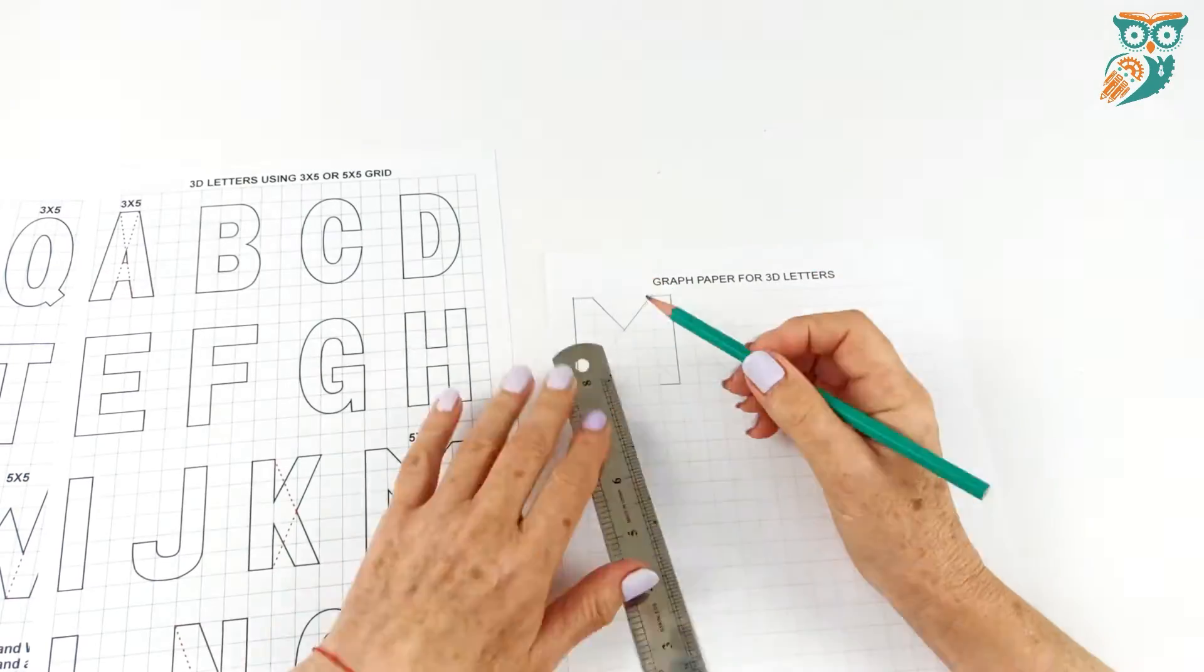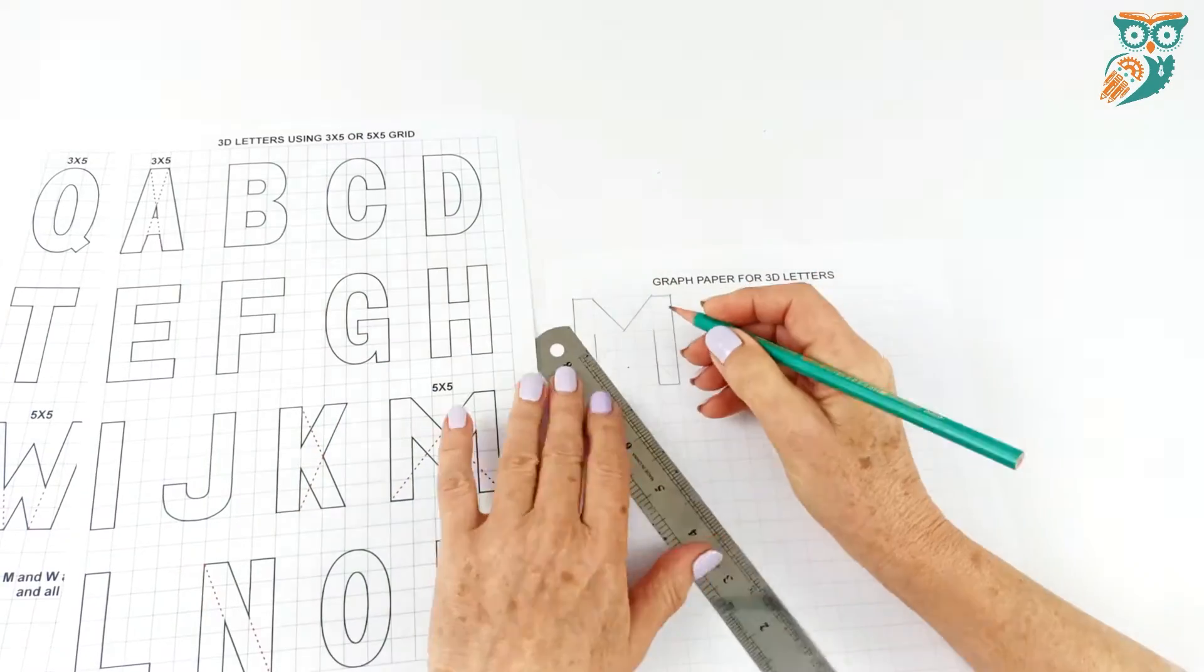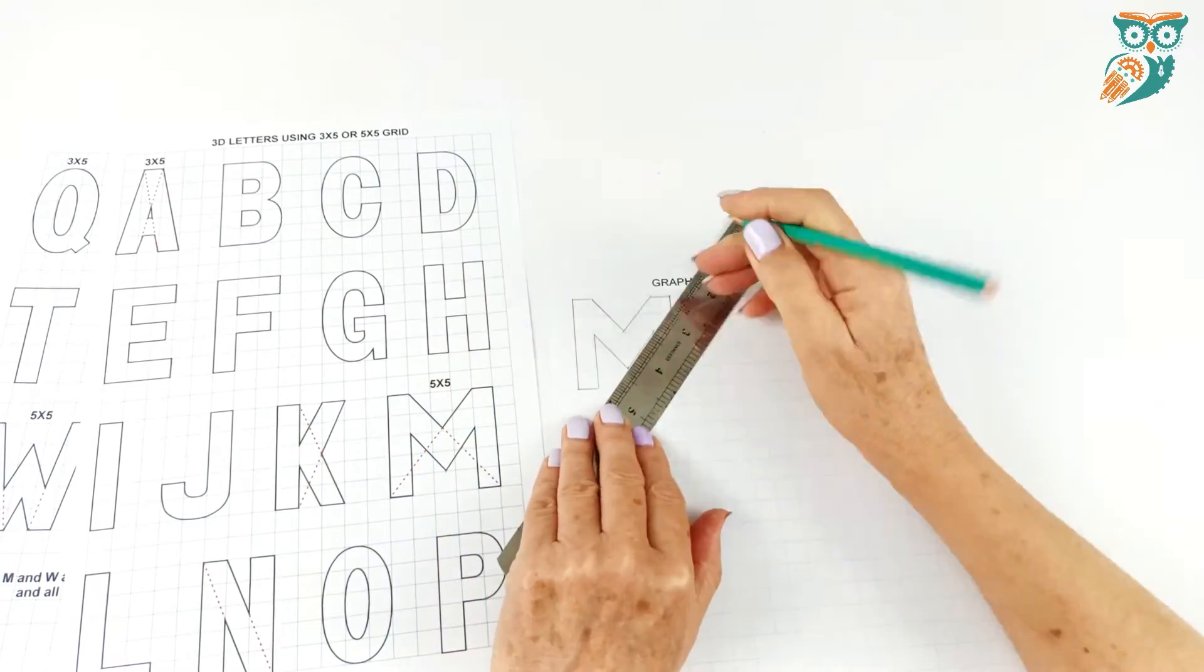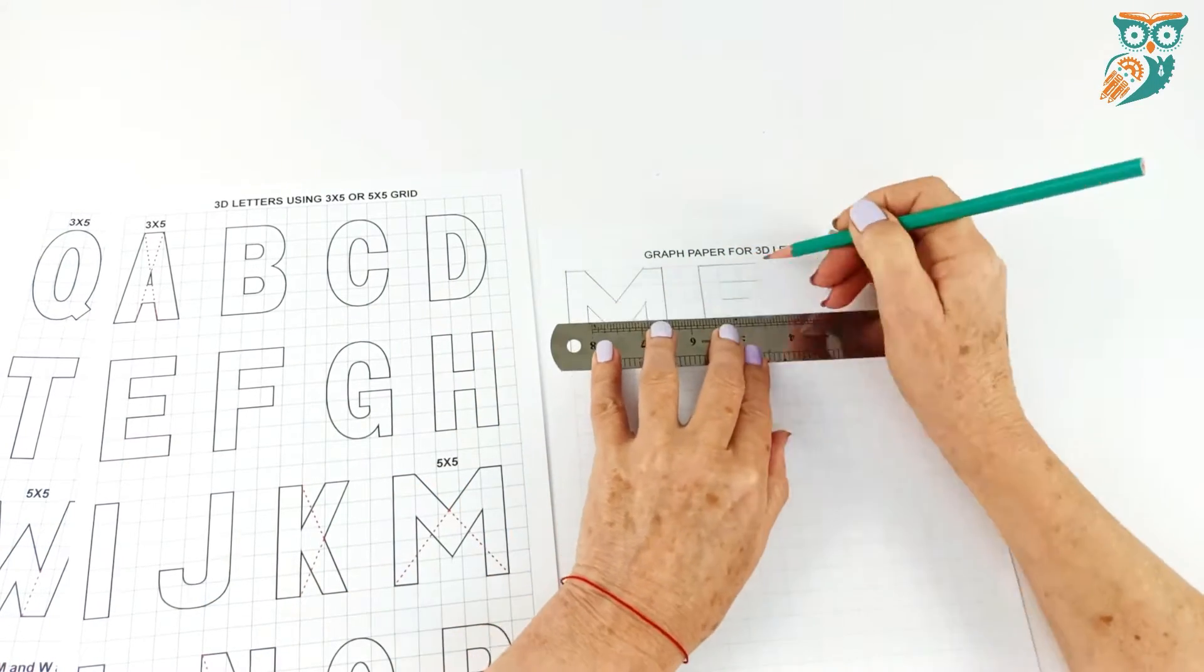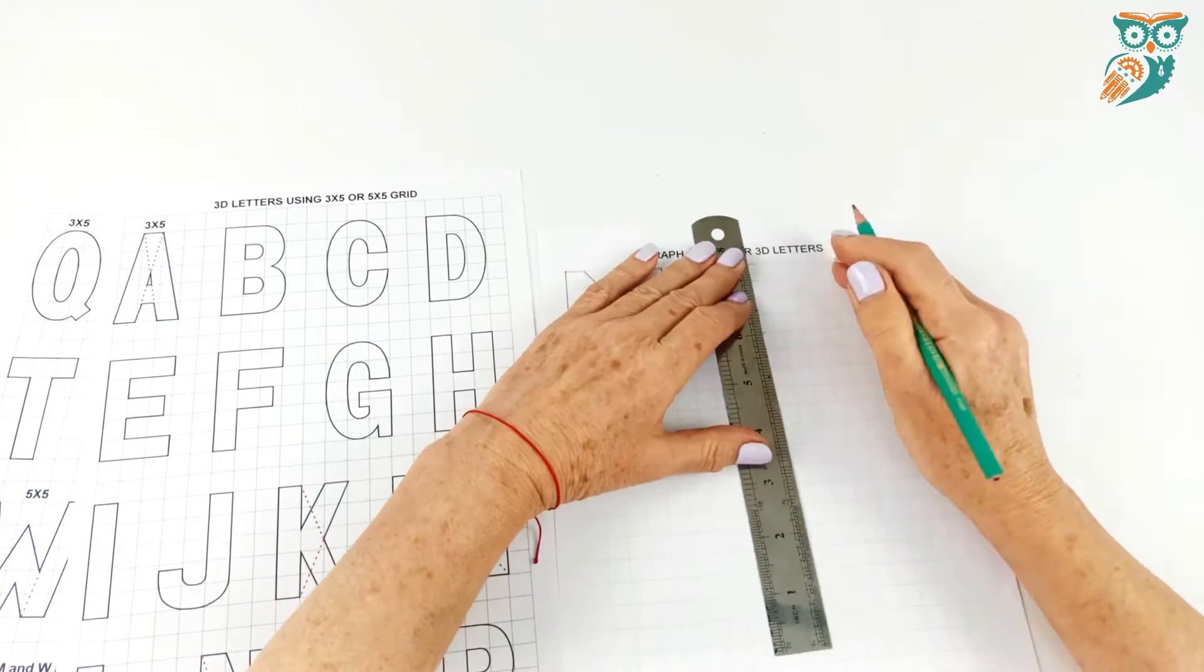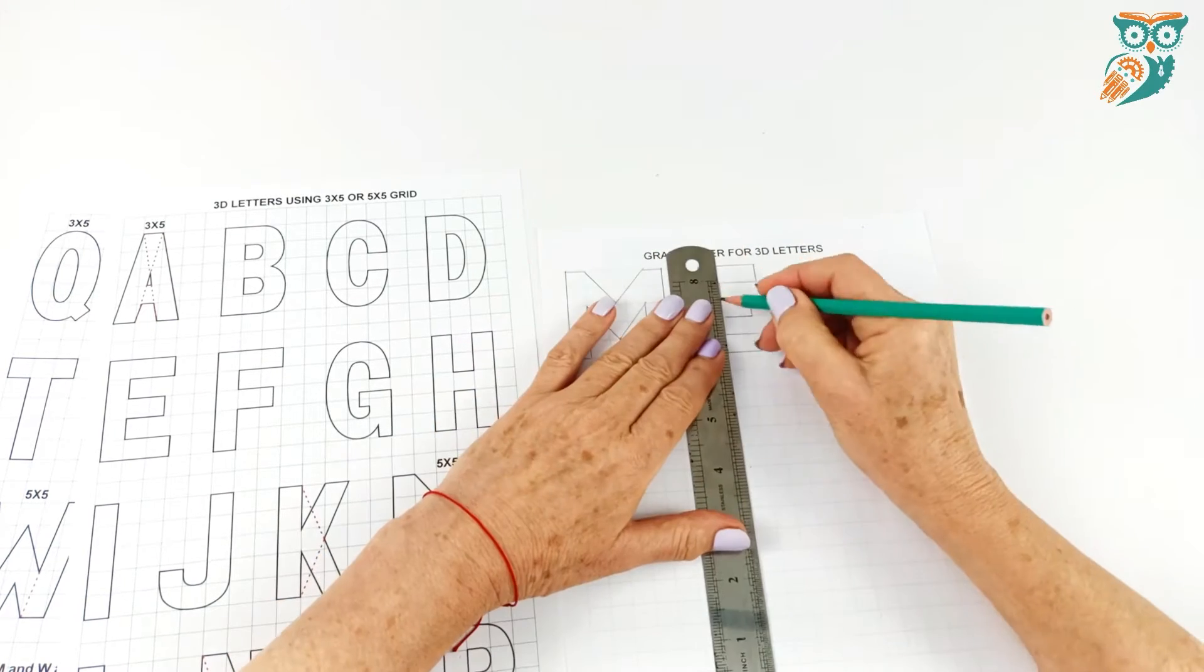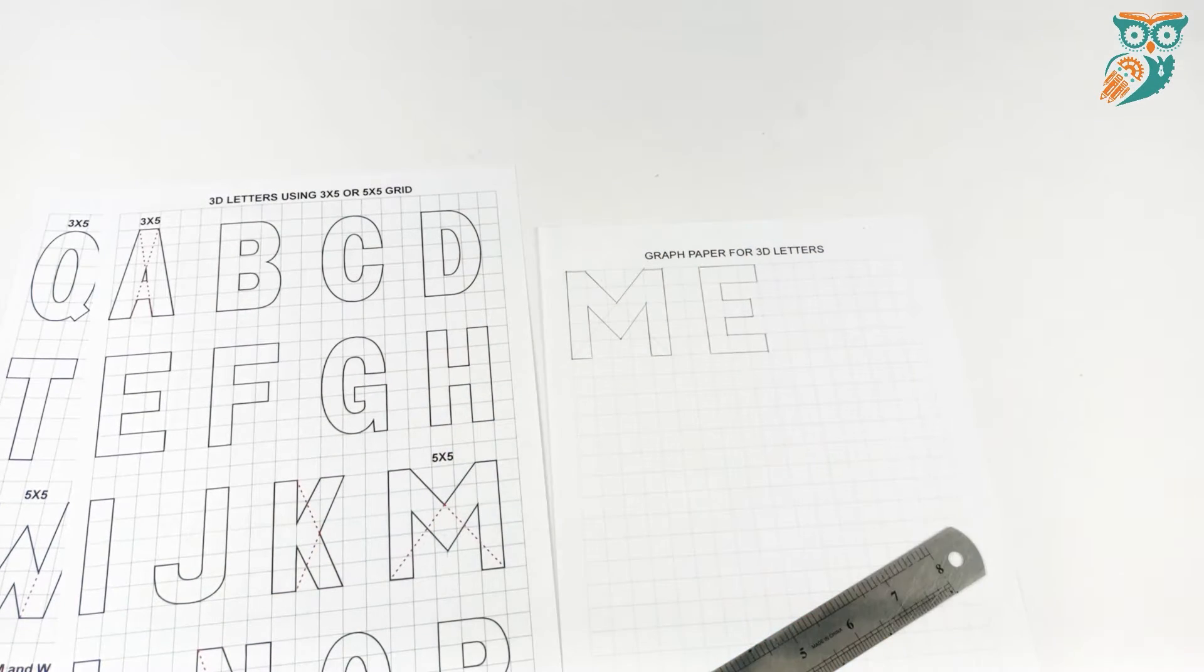And we're just gonna go and we're gonna start making our block letters on our grid paper. And we have all the letters there. It's all in capitals. So it makes it a little easier for creating your shapes. However, as you get better at making your 3D letters you can go lowercase as well.